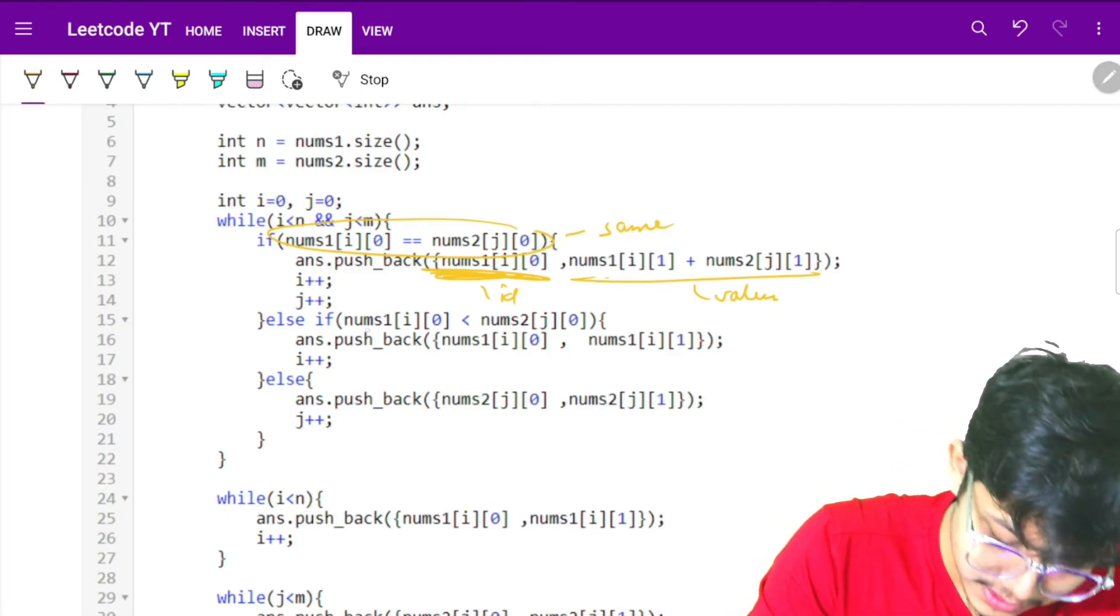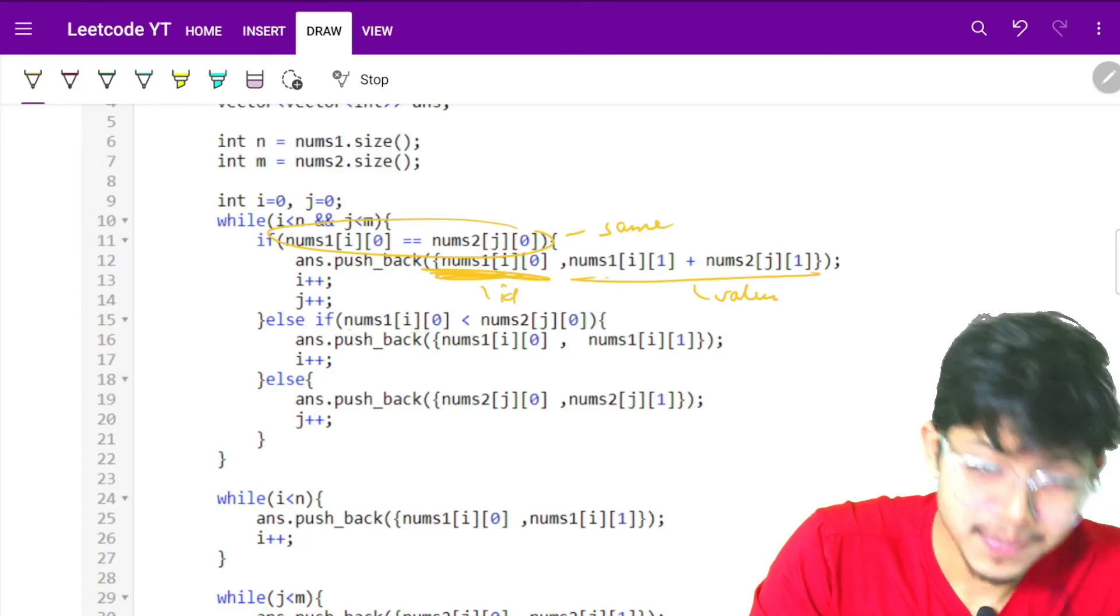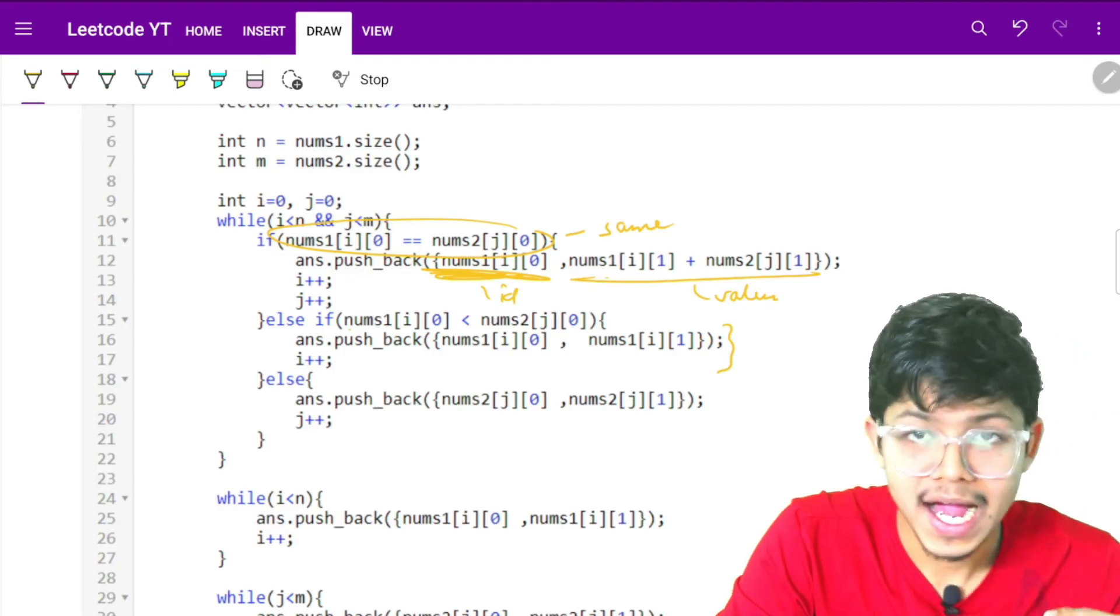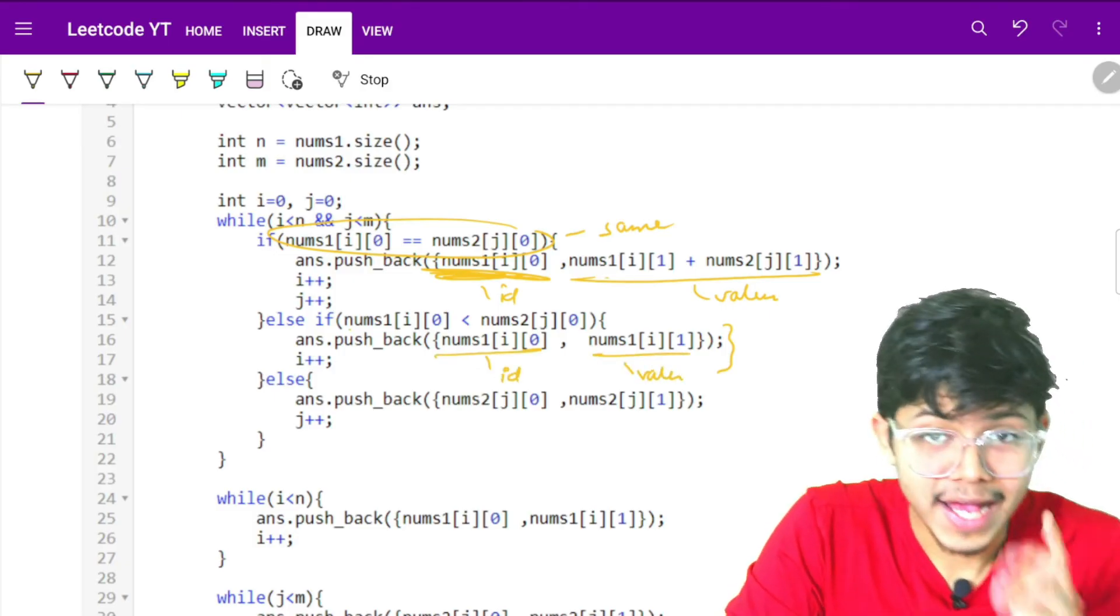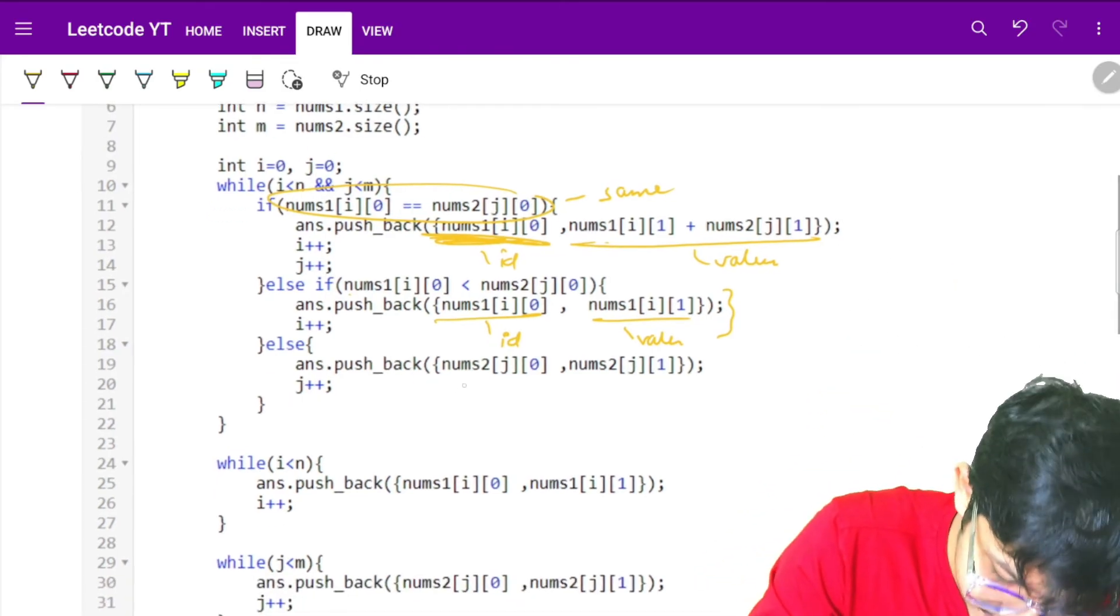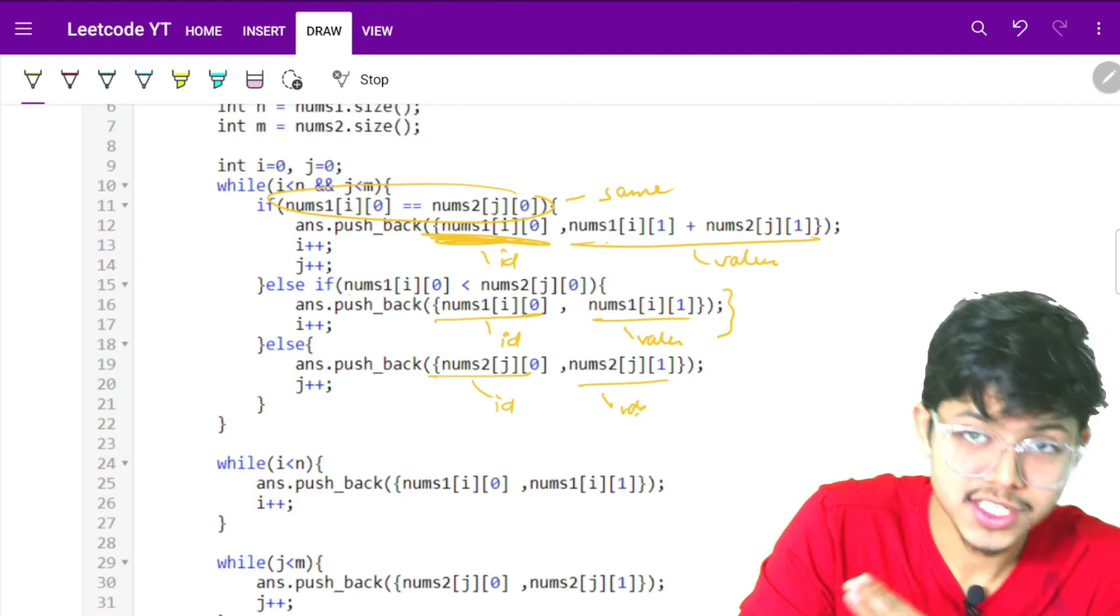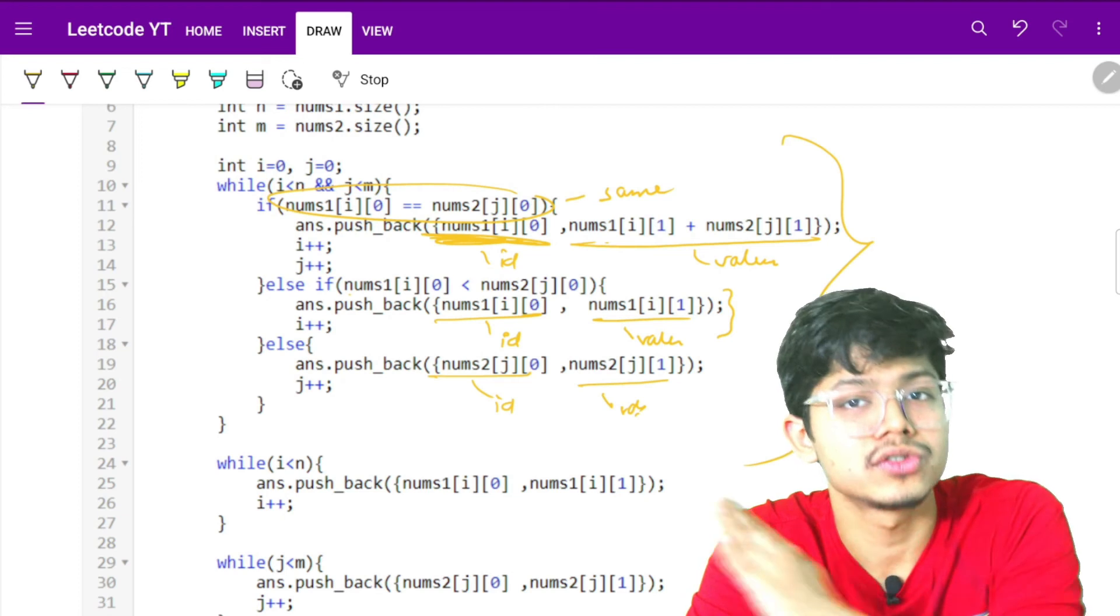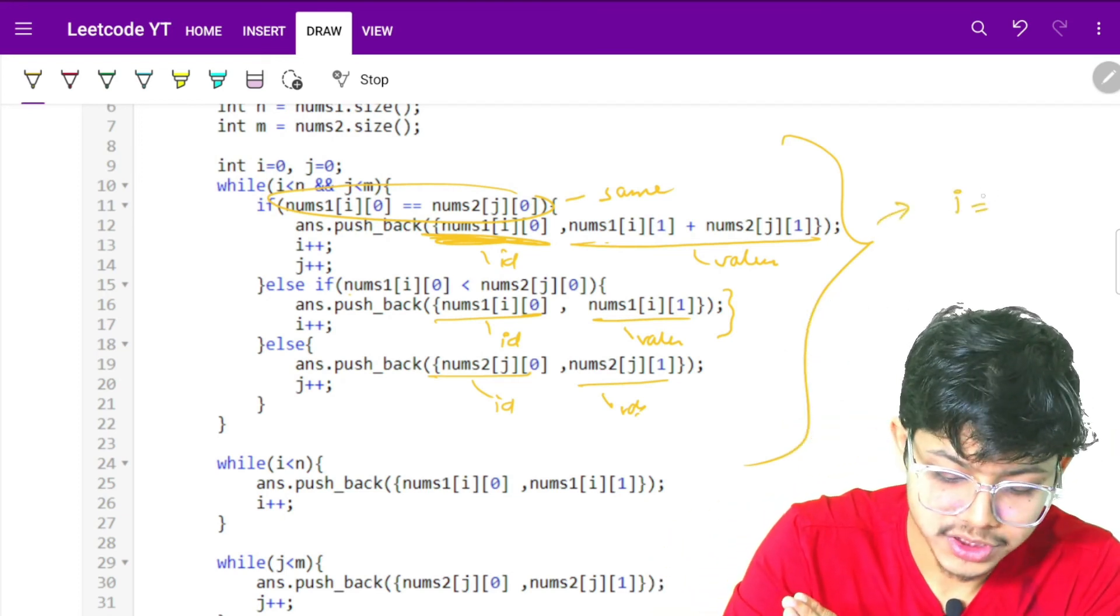After that, if nums1[i] ID is less than nums2[j] ID, I'll just push back my i ID and value. Else my ID of nums2 will be less, so it will be ID and value. I do this whole thing until my i is less than n and my j is also less than m.